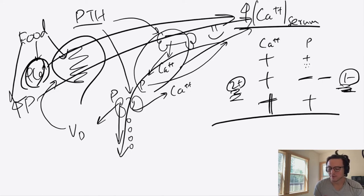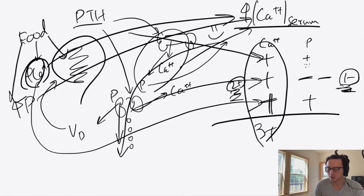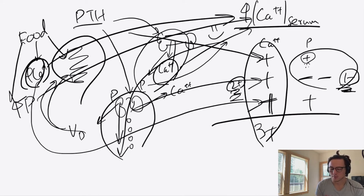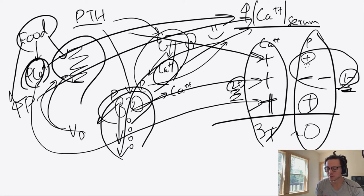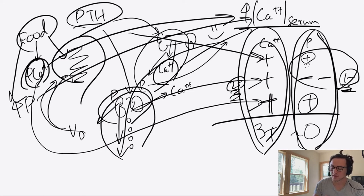So the net effect: you have three positives for calcium — from bone resorption, kidney reabsorption, and GI absorption from food. For phosphate, you have a small unwanted increase from bone resorption, balanced out by the kidney dumping phosphate — giving a net negative one — but then vitamin D tells the GI to absorb more phosphate from food, giving a positive. Net phosphate effect is near zero. Of course it depends on food intake and kidney function, but overall parathyroid hormone accomplishes its goal.